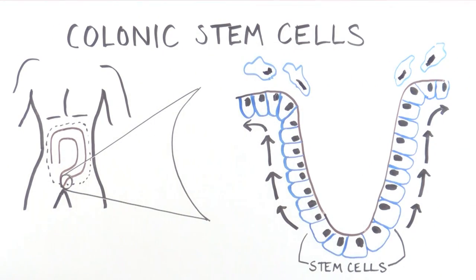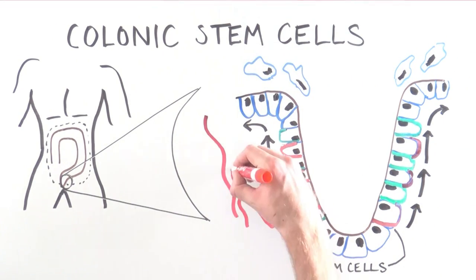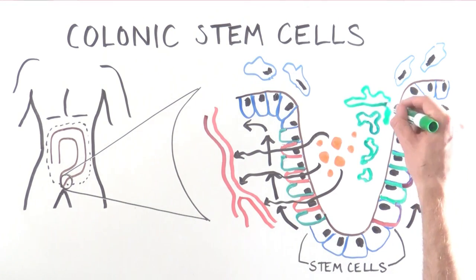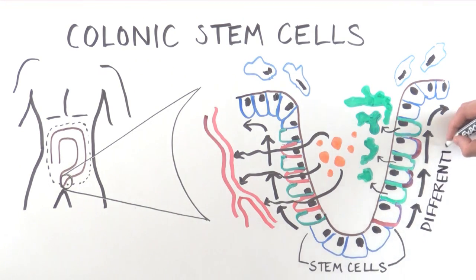As the cells move up, they take on specific functions, such as absorbing nutrients into our bloodstream or secreting mucus needed for the tissue to function. We call these differentiated cells.